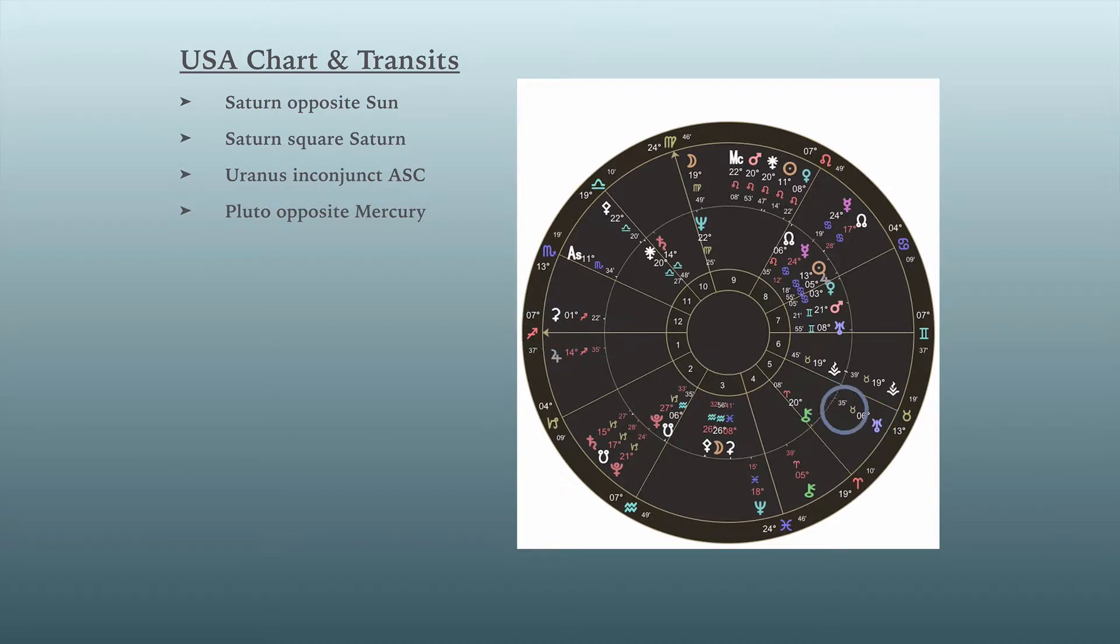And so something here, that Uranus energy that brings surprises, things that are unexpected, something shocking, that is entering the picture into the U.S. scene in general. And these energies, these challenging energies are going to continue into next year. They're going to be somewhat counterbalanced by a Jupiter energy beginning early next year. But between now and early next year, the U.S. has some challenging things occurring.